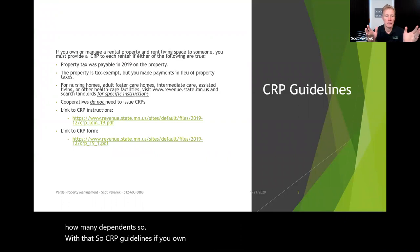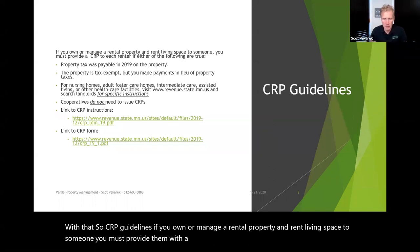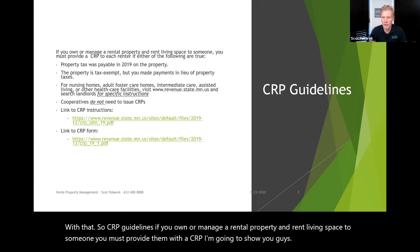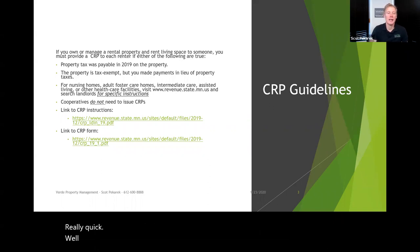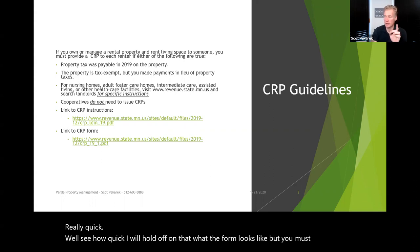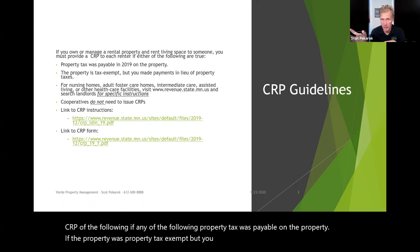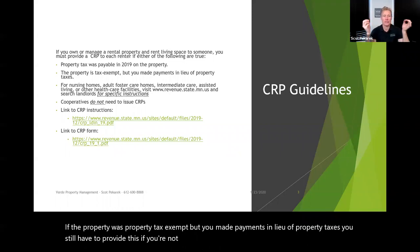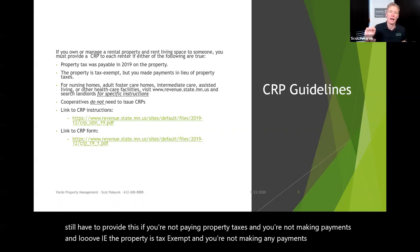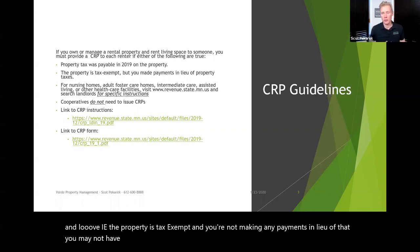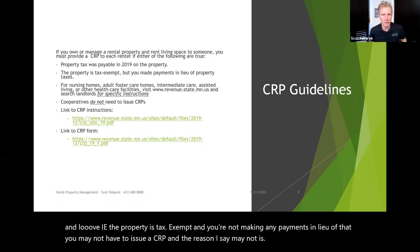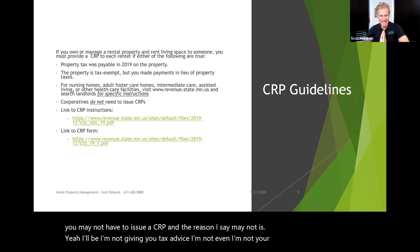If you own or manage a rental property and rent living space to someone, you must provide them with a CRP if any of the following are true: your property tax was payable on the property; if the property was tax exempt but you made payments in lieu of property taxes, you still have to provide this. If you're not paying property taxes and not making payments in lieu of — i.e., the property is tax exempt — you may not have to issue a CRP. I'm not giving you tax advice, so I want you to verify this.